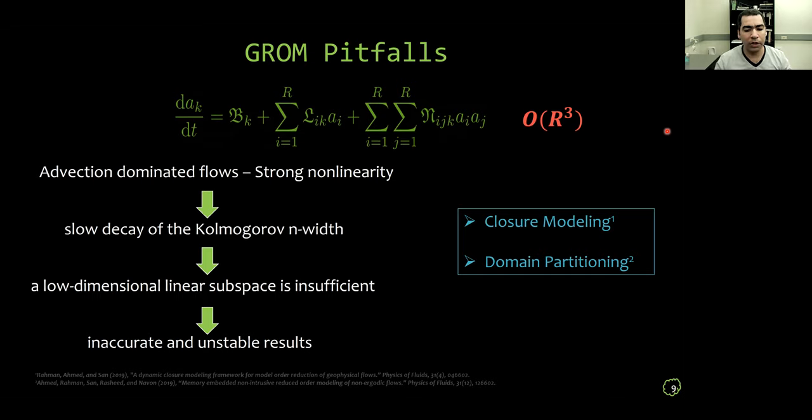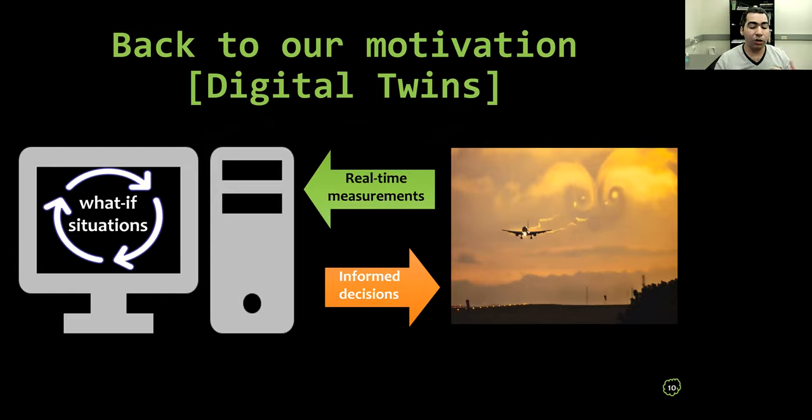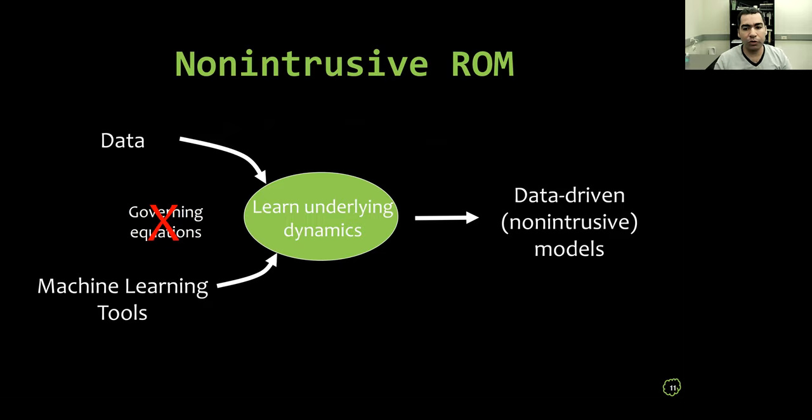So this eventually leads to some inaccurate and even unstable results. Ideas like closure modeling or domain partitioning and nonlinear manifolds have been explored to mitigate this issue. But anyway, people accept that we need to interfere here and add some correction to the Galerkin ROM. If we go back and recall our motivation, we find that there is a rich stream of data that we can utilize to do this correction. And these data streams are more available and rich nowadays than any time before.